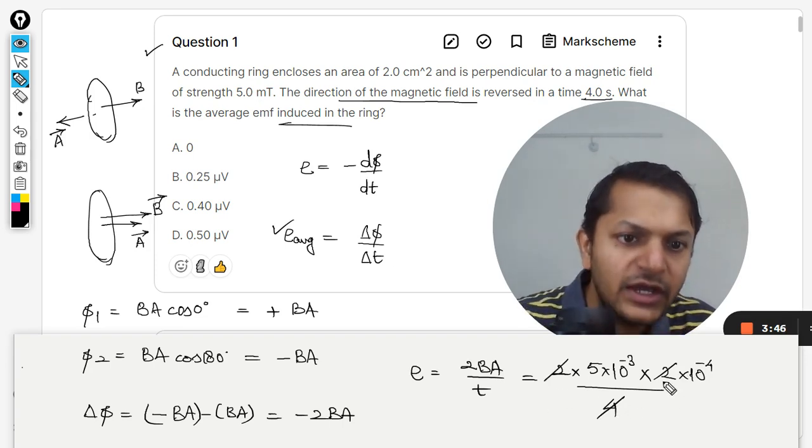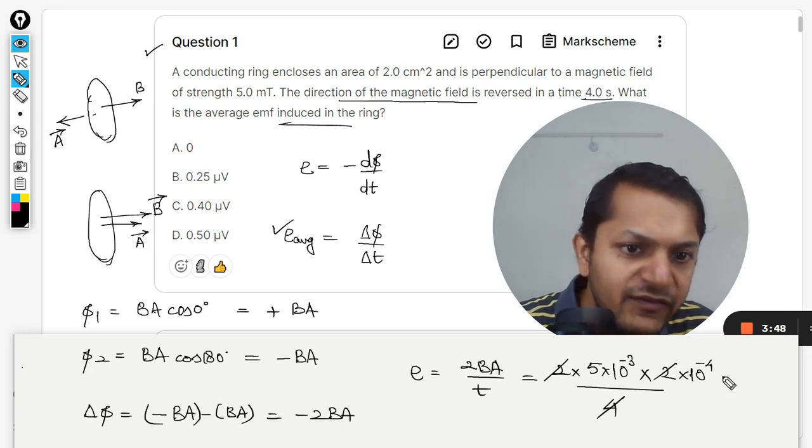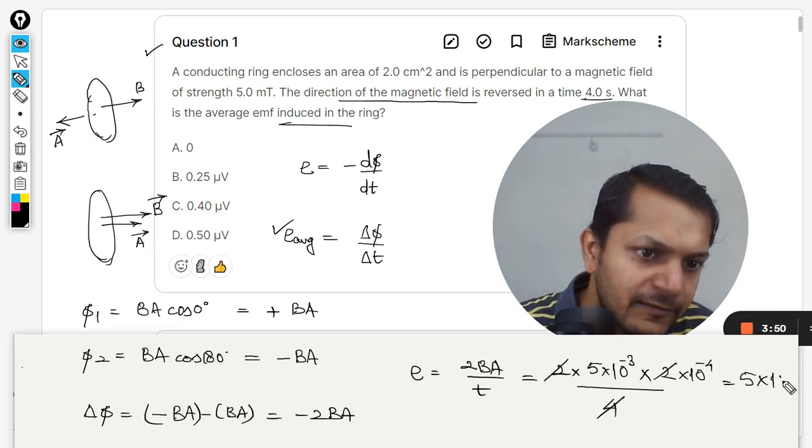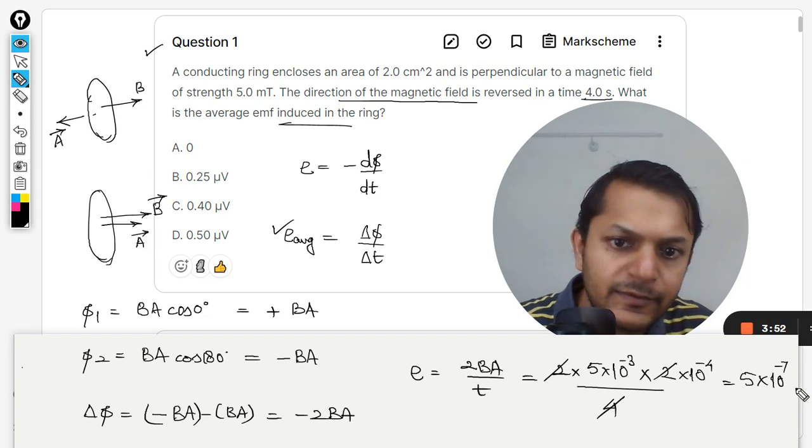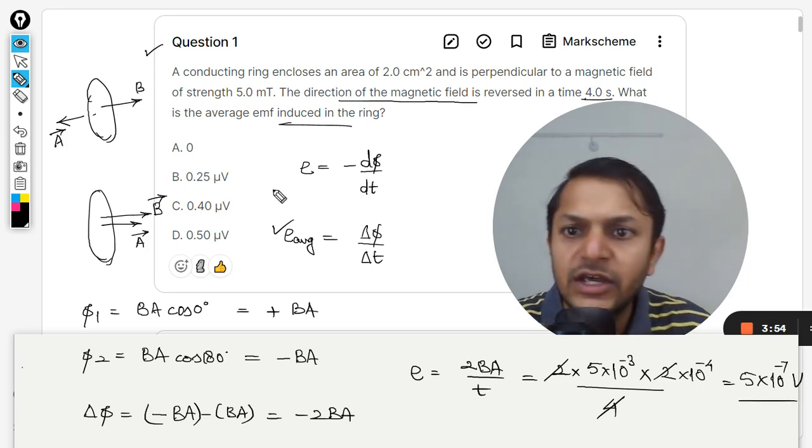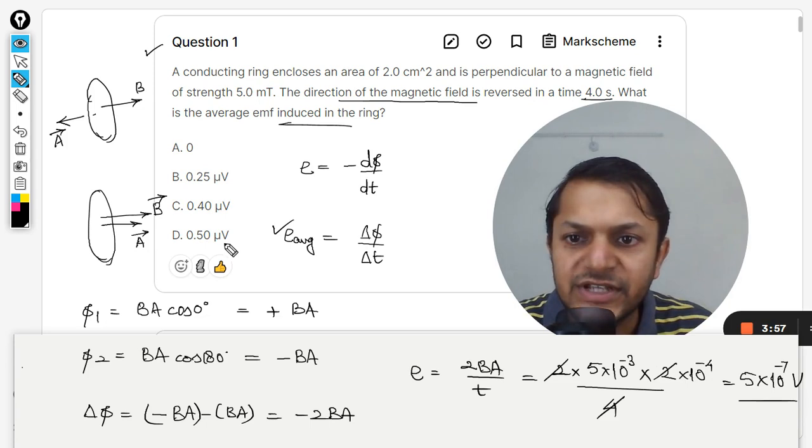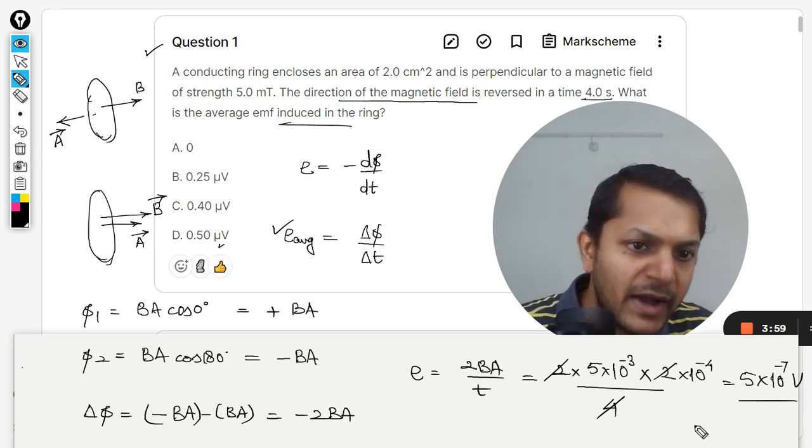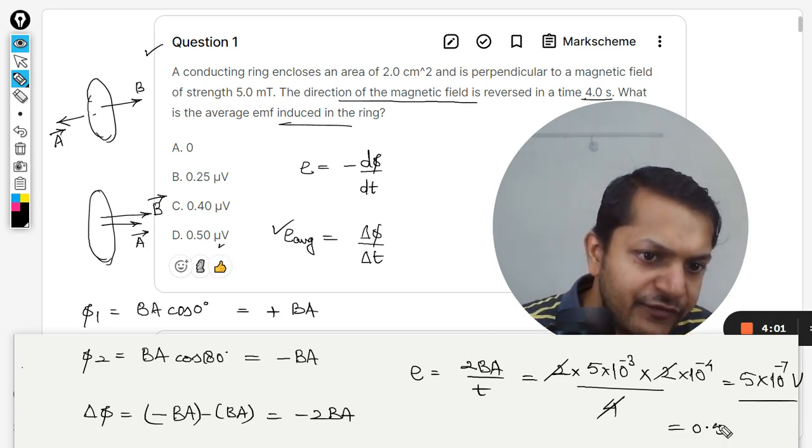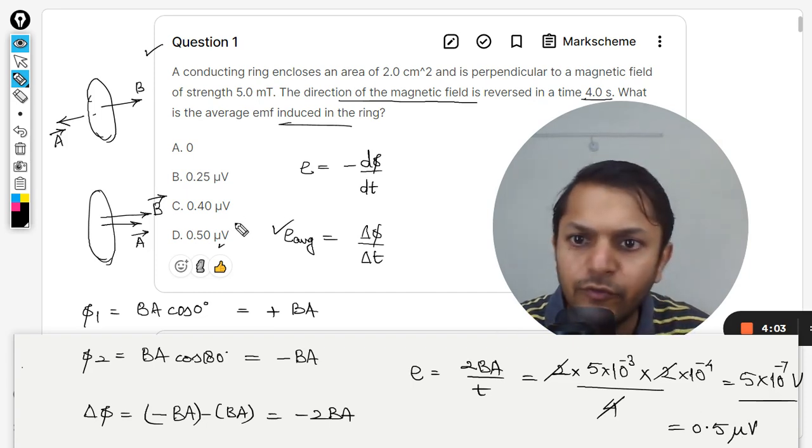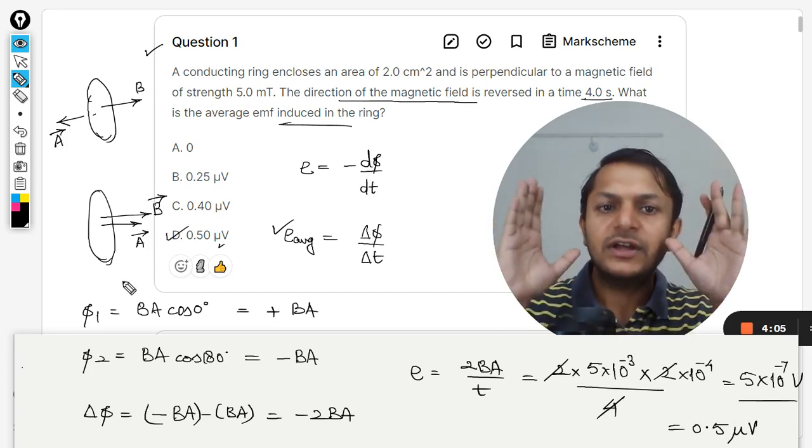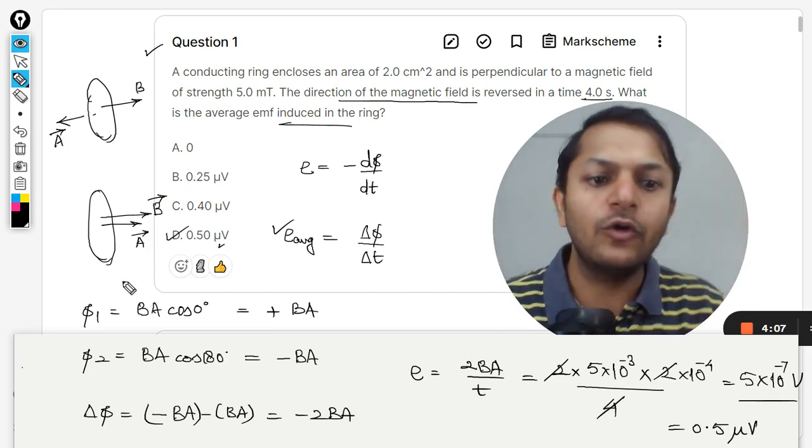Divided by time which is 4. So we cancel these out and it becomes 5 × 10^-7 volt. When we are going to check our options here they're talking in terms of micro, so you can say 0.5 microvolt and hence the answer D is correct.